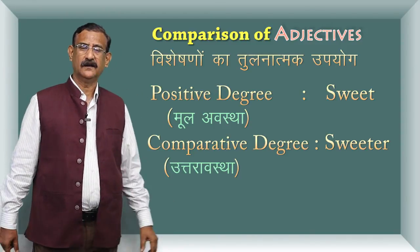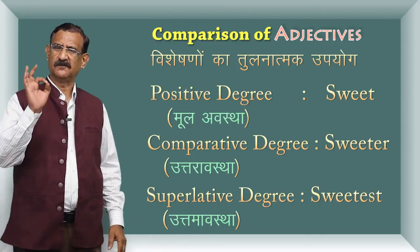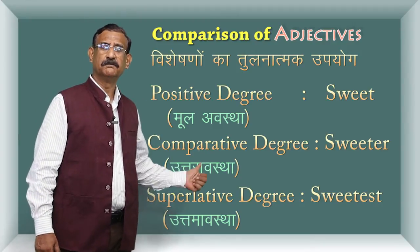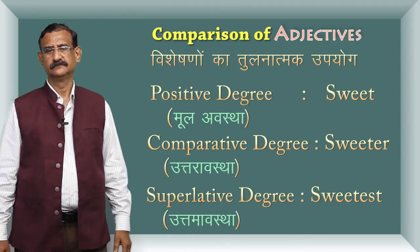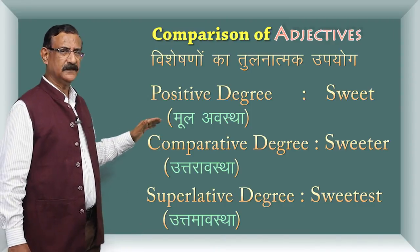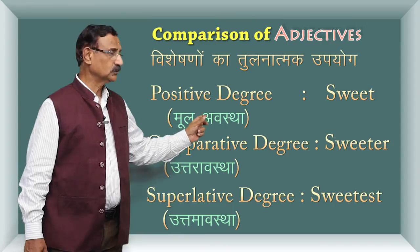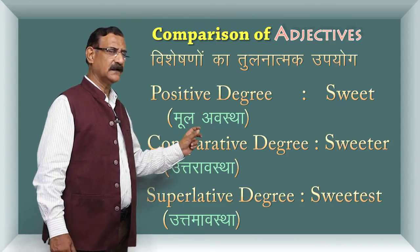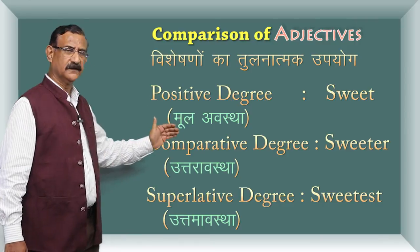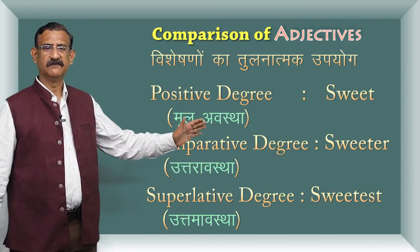Ab tisri jo hai — woh uttama avastha — uttam yani sarvashreshtha. Or uttama avastha ko Angrezi mein kehte hai superlative degree. Teen degree ya hain — Hindi mein: mool avastha, uttara avastha, or uttama avastha. Angrezi mein: positive degree, comparative degree, and superlative degree.